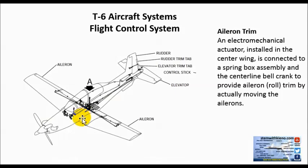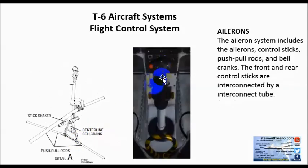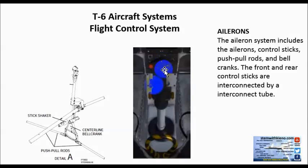Aileron trim is an electrical mechanical actuator installed on the center wing. It's connected to a spring box assembly and a centerline bell crank to provide aileron or roll trim by actually moving the ailerons. When you go to your stick, ailerons would be left to right. Pitch would be pushing the button up or down — so if you wanted to trim nose up, you would pull down on this button. For aileron trim, you would depress the button left and right.